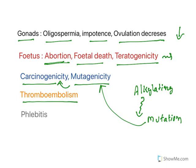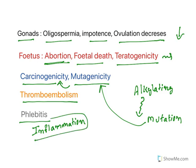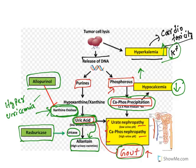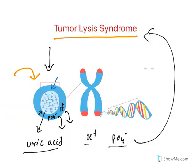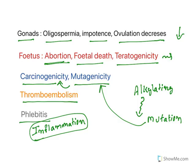Some drugs cause thromboembolism — clotting problems — and phlebitis, which is inflammation of the vein. Some drugs have vesicant properties; they cause burning sensation and, if not administered properly, they cause inflammation of the vein.